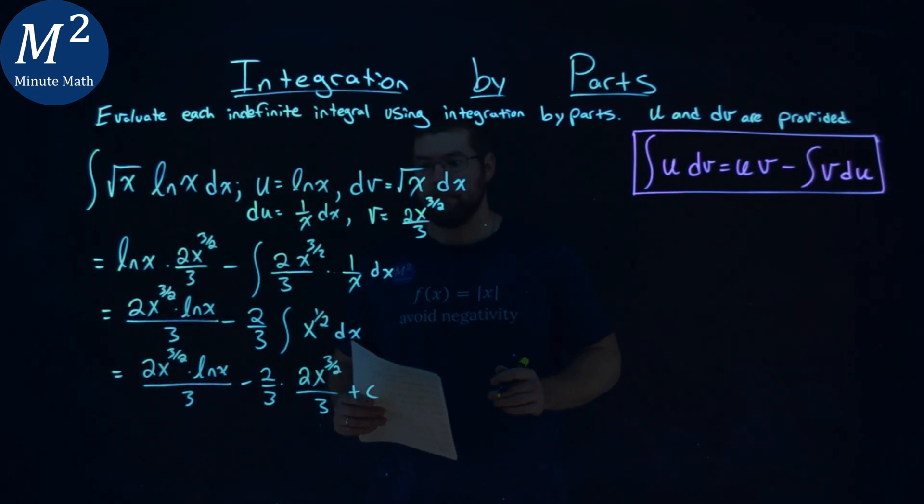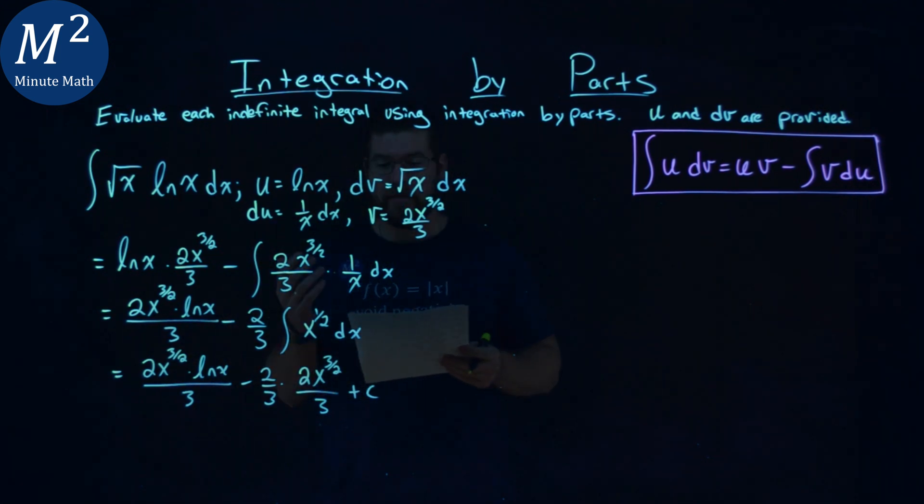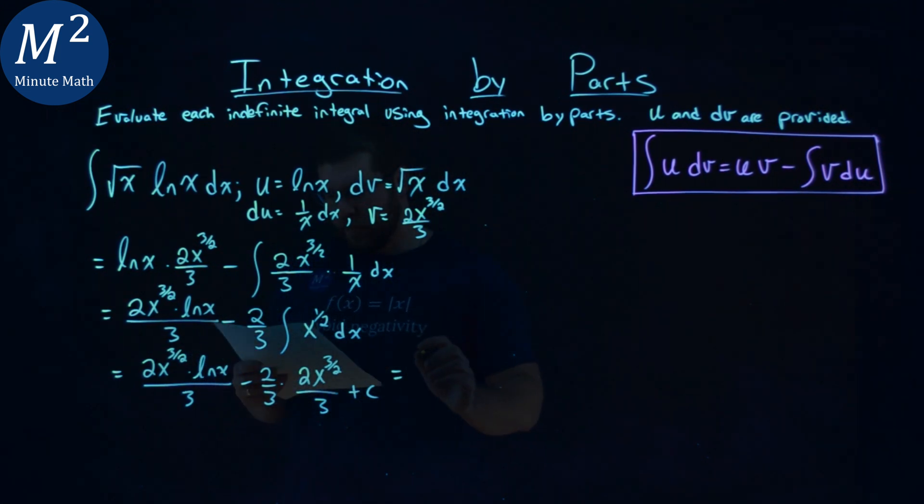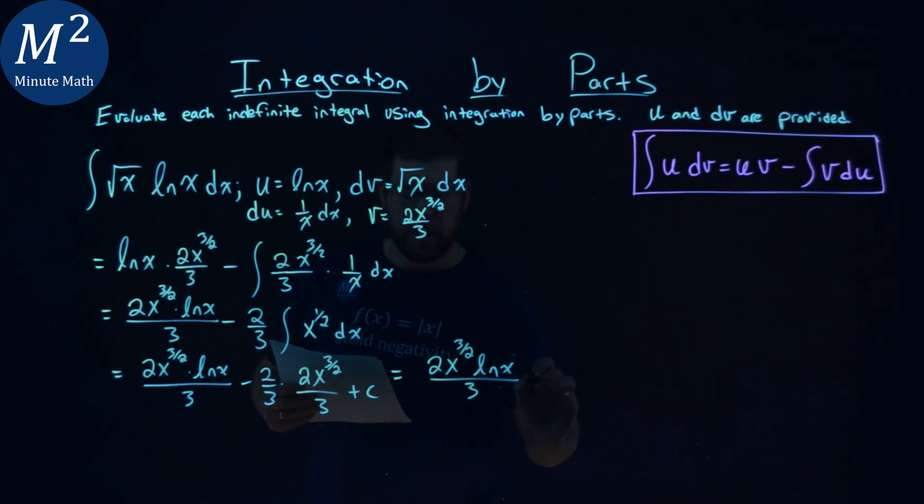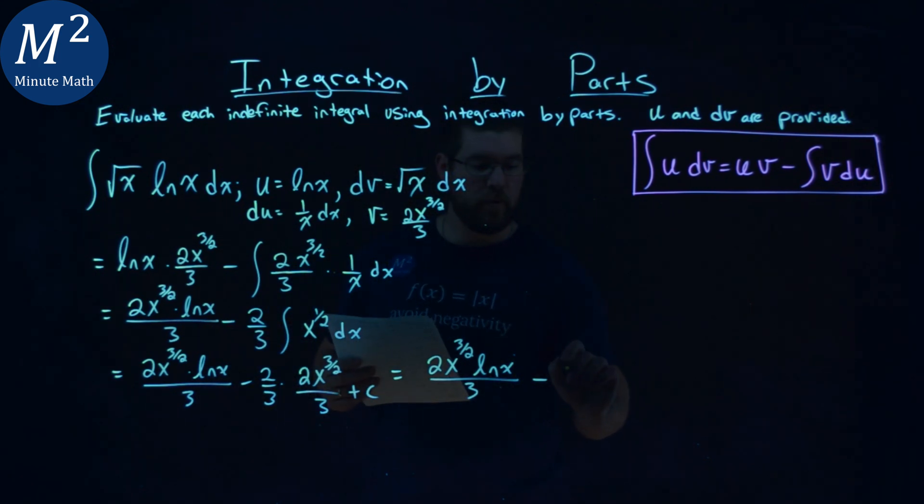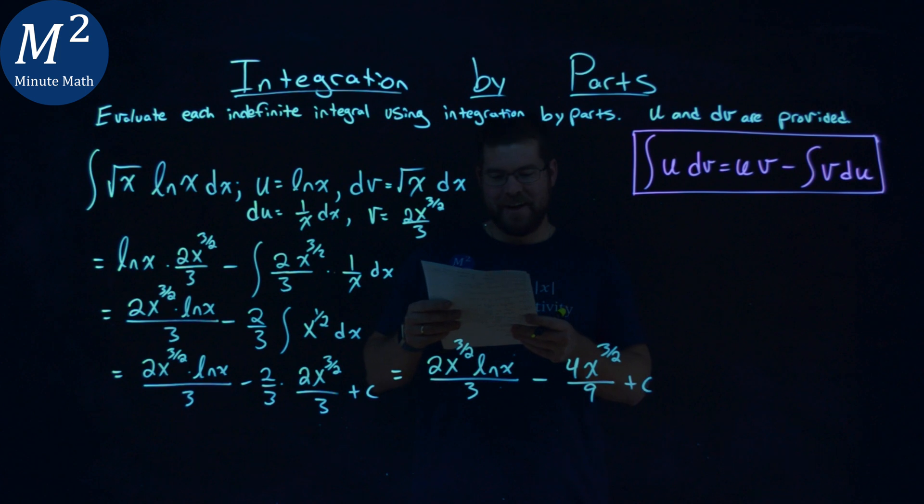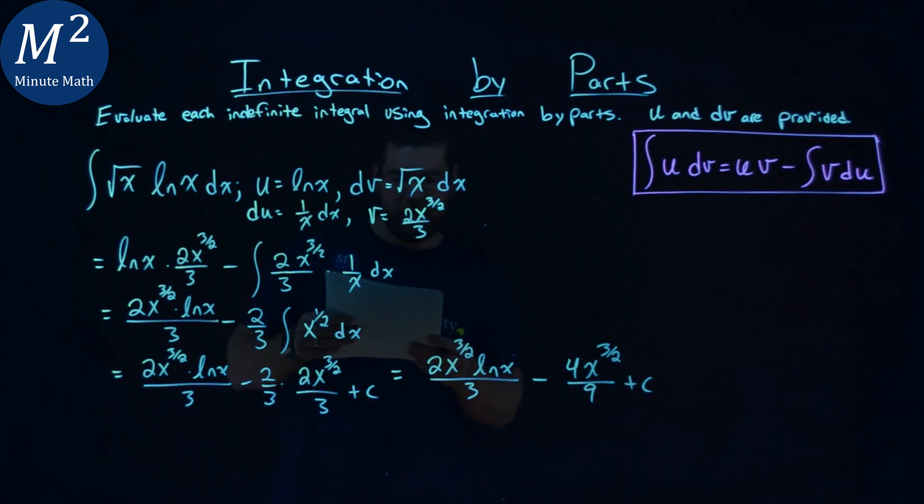And now, we just want to simplify this out a little here. So, again, the front part just stays the same. We have 2 x to the 3 halves power times the natural log of x over 3, minus, combine it, we have 4 in the numerator, x to the 3 halves power, over 3 times 3 is 9, plus c. Double-checking, I got it right here, making sure everything lined up, and we're good.